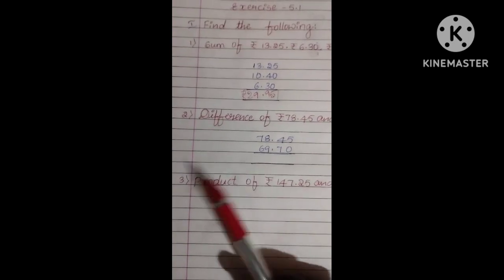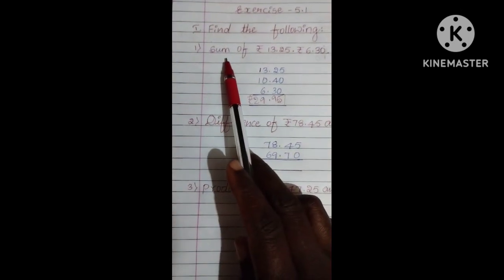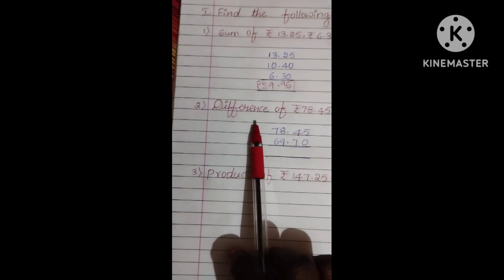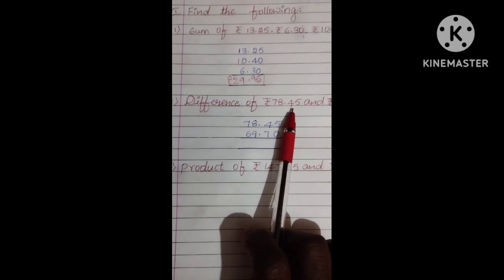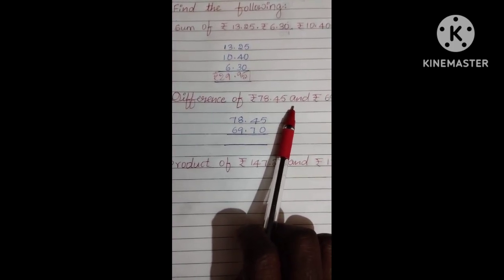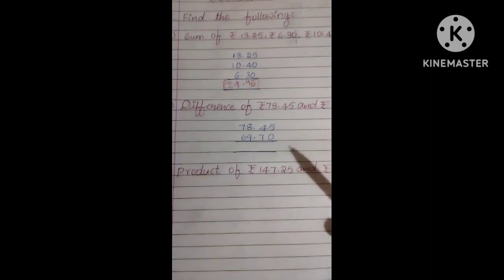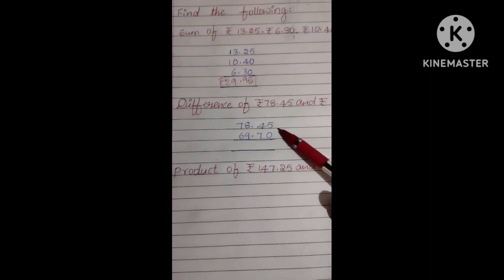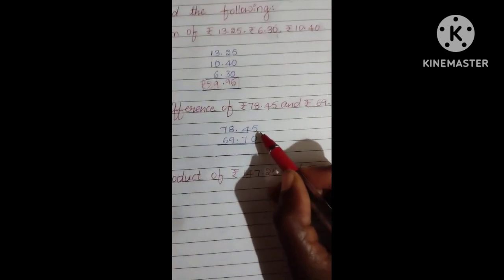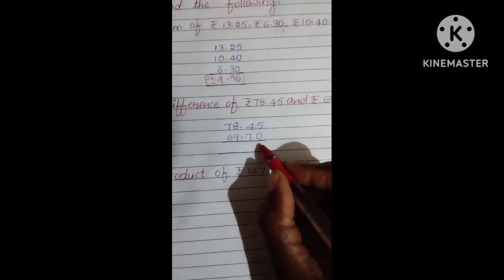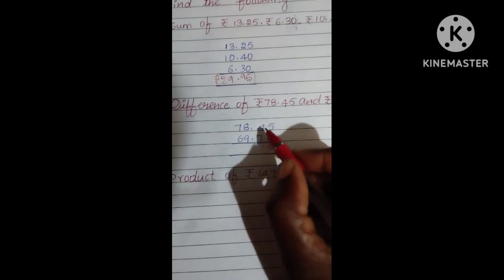Next question, we have difference means subtraction. Sum means addition. Difference of Rupees 78 and 45 paise and Rupees 69 and 75 paise. See here, big number always you can write up. The small number you can write down. Here we have 5 minus 0, 5. There is no doubt. 4 minus 7 can't go.